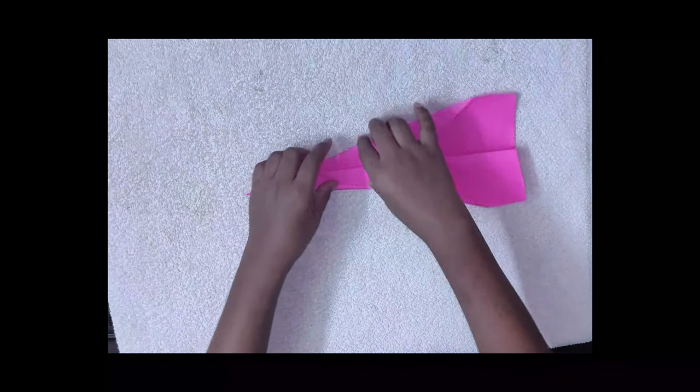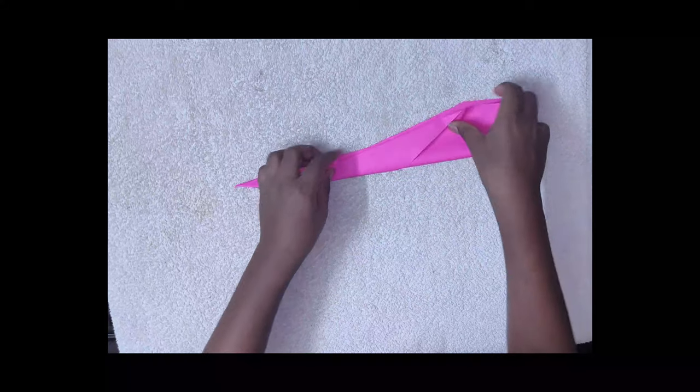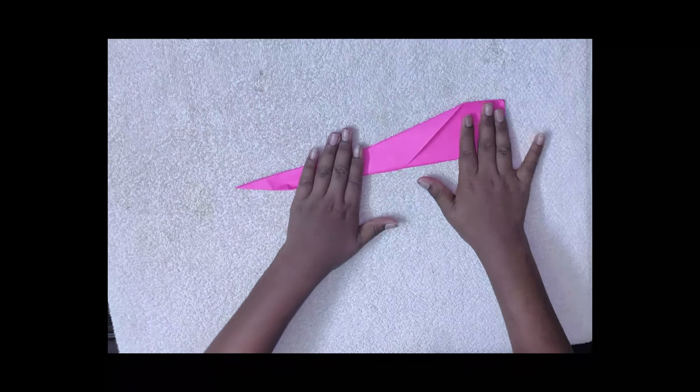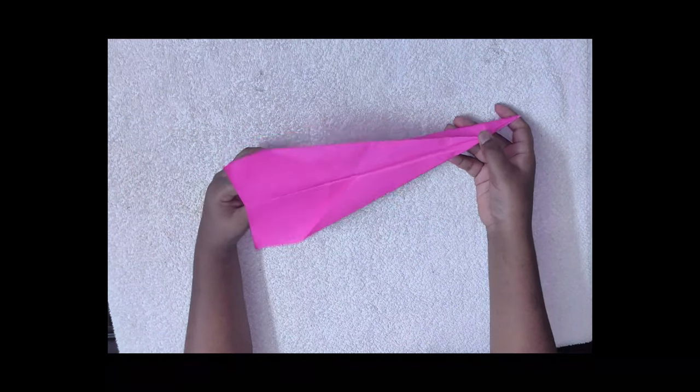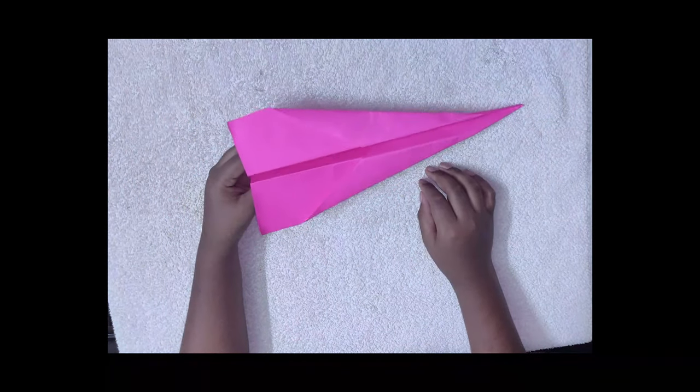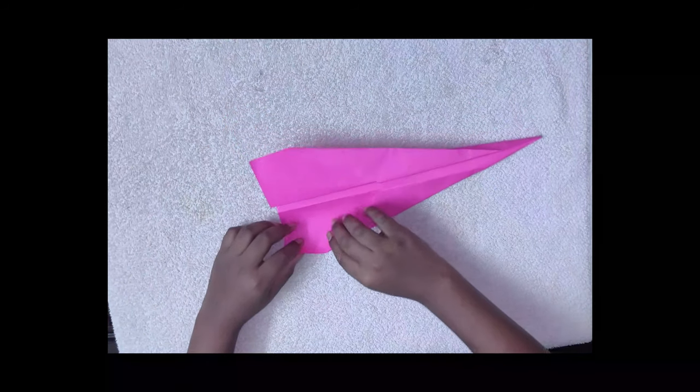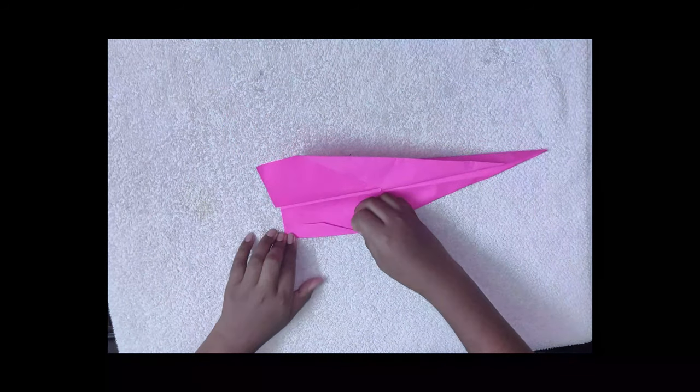You got like this. Now take the other side and do the same, make sure it matches. We got a nice paper plane. Now you can do many modifications. I'll add some modifications like this.